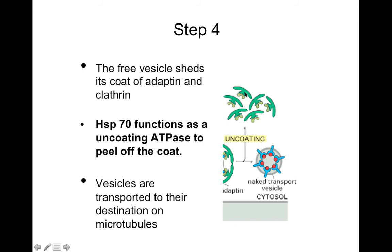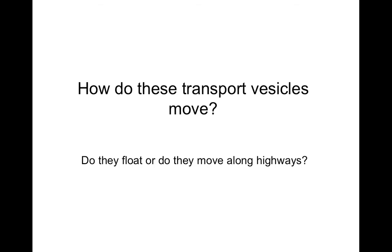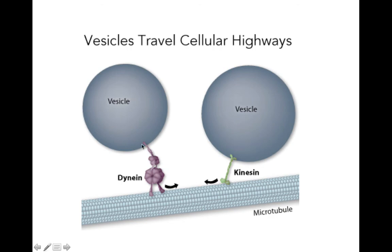The vesicle then needs to shed its clathrin coat. A protein called heat shock protein 70 functions as the uncoating ATPase to peel off the clathrin coat. After the coat is removed, vesicles are transported to their destination — they don't just float through the cell; they move along highways. You can see the microtubular highways, and vesicles are attached to proteins called dynein and kinesin, which walk along the microtubule and carry the vesicles containing the cargo.